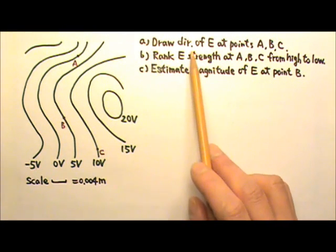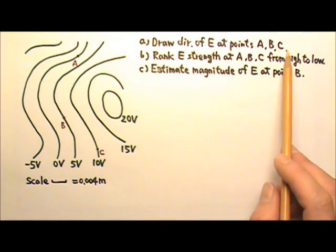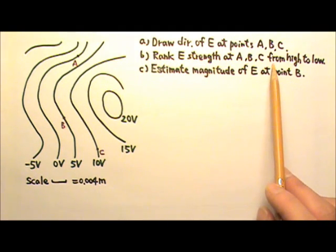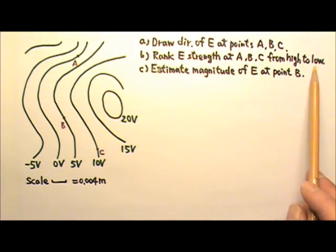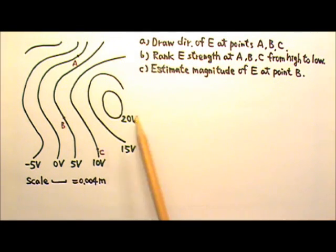Part A: Draw direction of electric field at points A, B, and C. Part B: Rank electric field strength at points A, B, and C from high to low. Part C: Estimate the magnitude of electric field at point B.